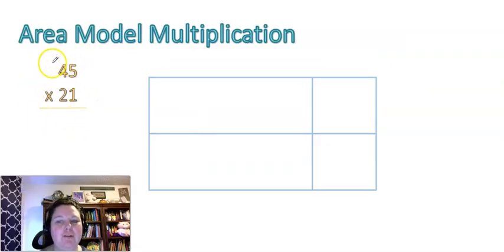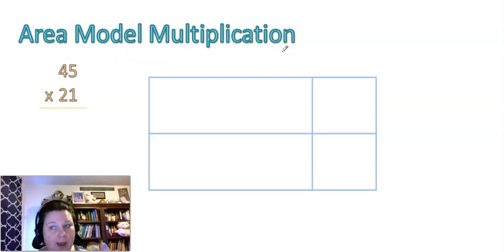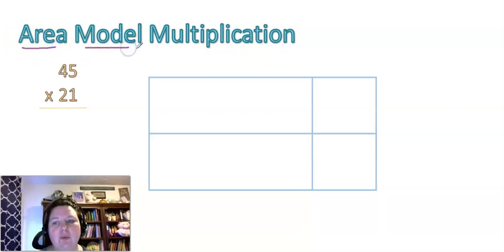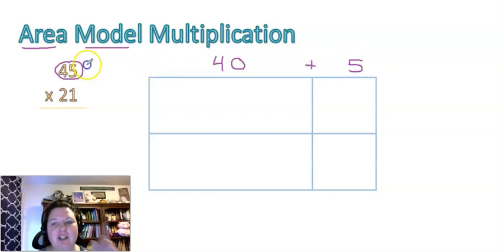Okay, so we're going to solve 45 times 21, except this time we're using the area model method, sometimes known as the box method or the new math method or even common core method. There's a lot of different nicknames for this type of multiplication. So let's start with 45 and take that number and break it up into tens and ones. So 45 is actually the same as 40 and five.